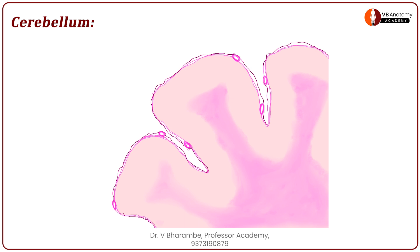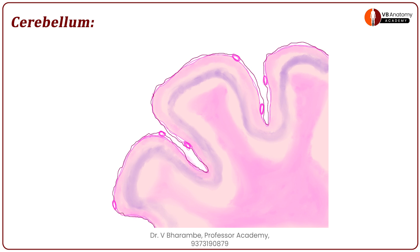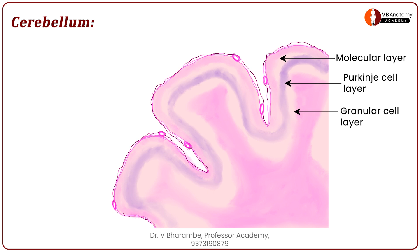Now we will further work on the grey matter. In the grey matter, begin to draw this line, then just deep to it draw another line. You're basically creating a base within the cortex, also dividing it. The outer grey matter consists of three layers: the outer molecular layer, the intermediate Purkinje cell layer, and the innermost granular layer.